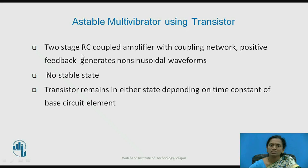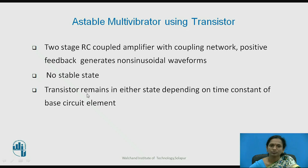Recall the definition: the astable multivibrator is a two-stage amplifier with coupling networks. Positive feedback generates non-sinusoidal waveforms. A very important characteristic is that it has two quasi-stable states — two temporary states — and therefore no stable state. The transistor switches between either state depending on the time constant of the base circuit elements.